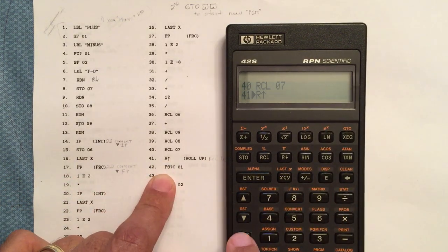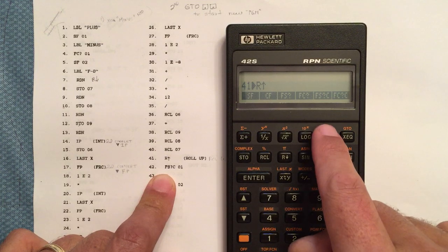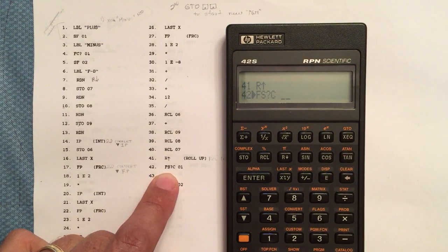Okay, line 42. That's going to be under flags, FSC. We're going to do 01. Plus.